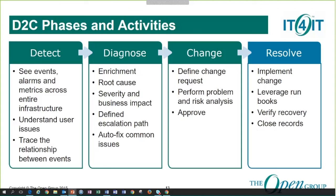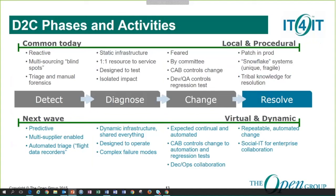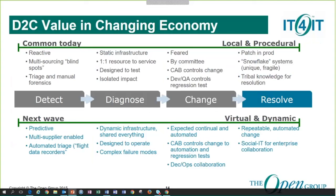These phases and associated activities are critical in today's environment. We know our environment is changing, and we think detect-to-correct, from the work we've done and the people we've talked to in the industry, is well-placed to facilitate that. We are moving today from a localized, central, on-premise type of offering to really the next wave — where it's more predictive, more dynamic. We have the whole DevOps movement, so things are happening faster, and we need to move with that. We think detect-to-correct facilitates that.